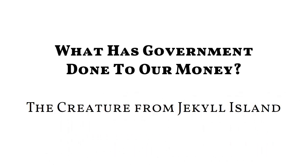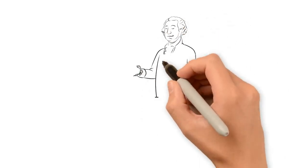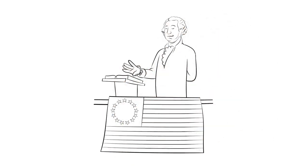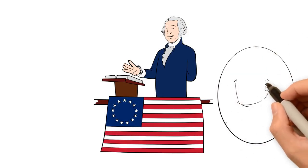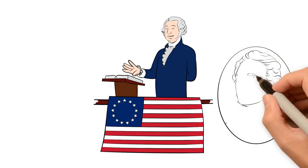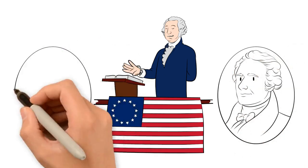The Creature from Jekyll Island. The battle over a central bank is an issue that goes back to the beginning of America. The Federalists, led by Alexander Hamilton, wanted the new American government to resemble the British Empire, with their own Bank of England.